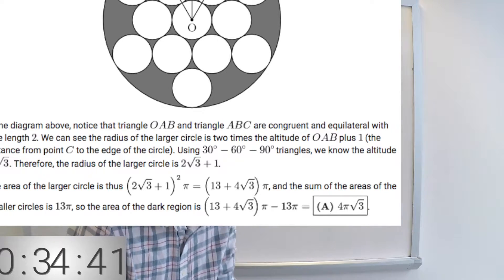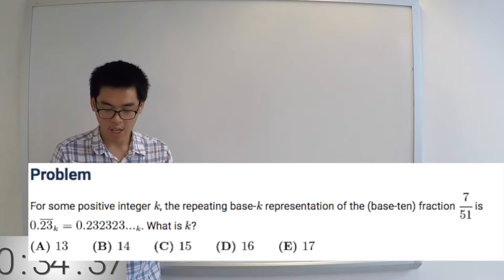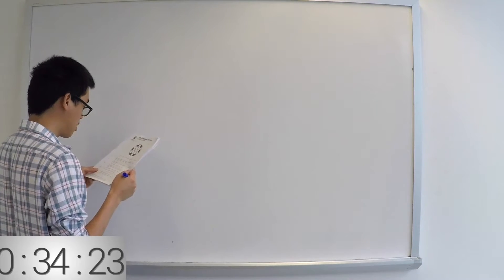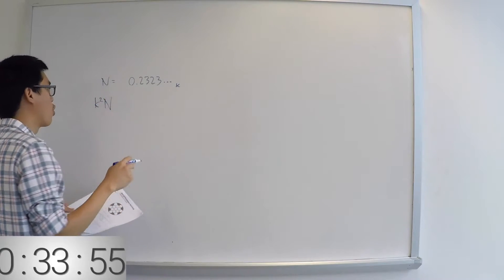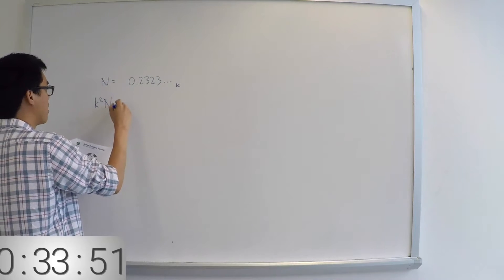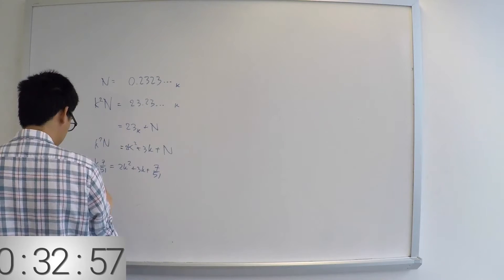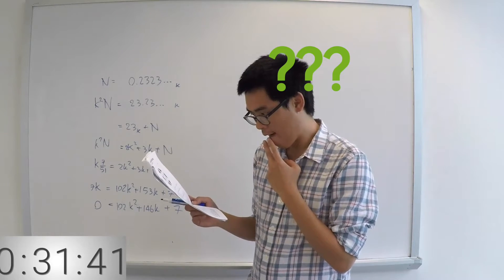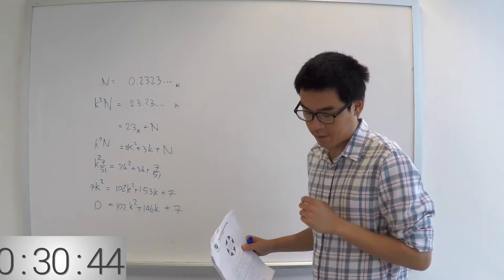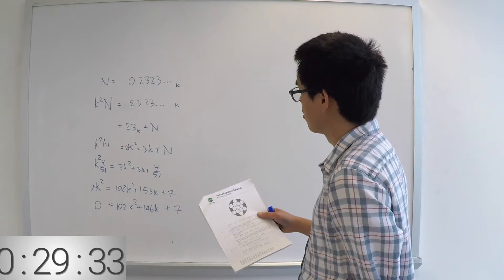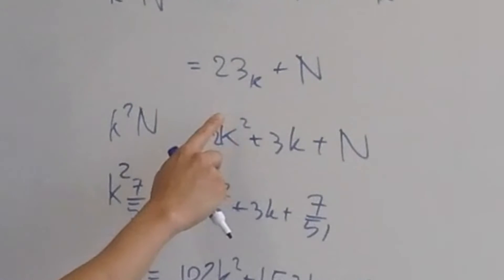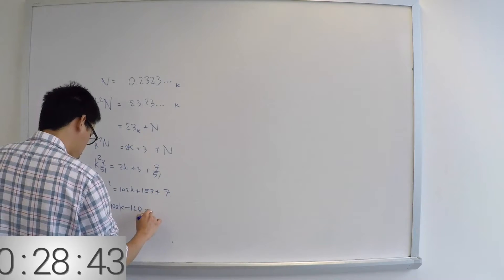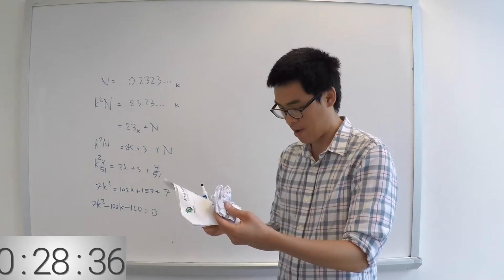For some positive integer k, the repeating base-k representation 0.232323... equals 7/k² plus... In base 10, you multiply by 10 to shift; in base k you multiply by k, so plus n gives 2k² divided by 5, by 7. So 23 base k is 2k plus 3, giving a quadratic whose roots must divide 160. The answer needs to be 16.